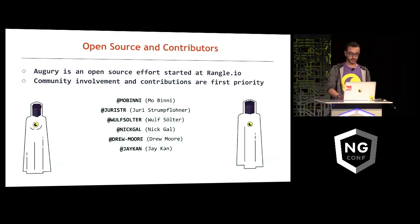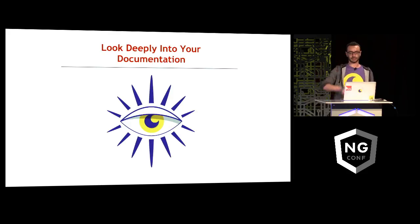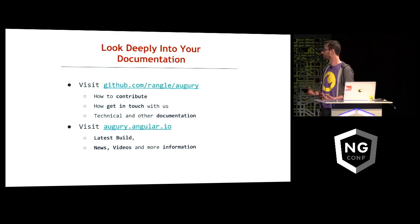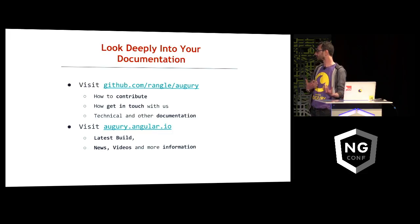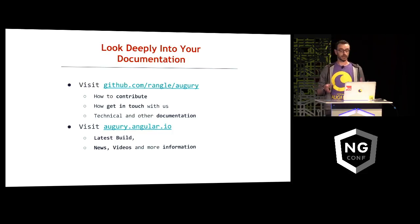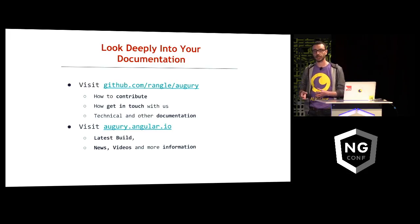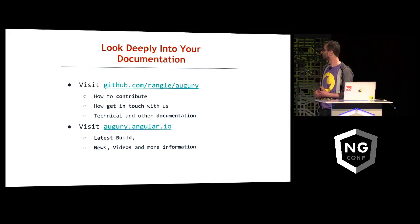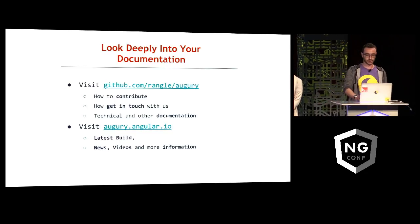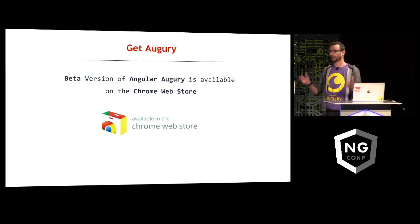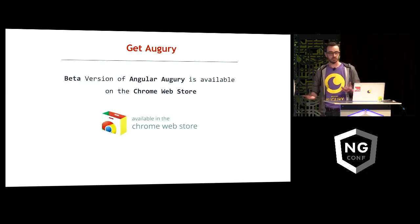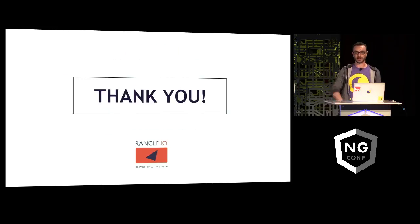Community involvement is our first priority. There are a few sources where you can get documentation about this. The obvious one is our GitHub repo, where you can find information on how to contribute, how to get in touch with us, and lots of different technical, architectural, and other types of documentation. We also have augury.angular.io, which has a link to the Chrome Store, and we'll be adding lots of information to it soon — the latest build, news, videos, and all kinds of information. I want to encourage everyone to get Augury from the Chrome Store, use it, provide us feedback, open a GitHub issue, create a PR — whatever you can. We'll definitely appreciate everything. Thank you very much.